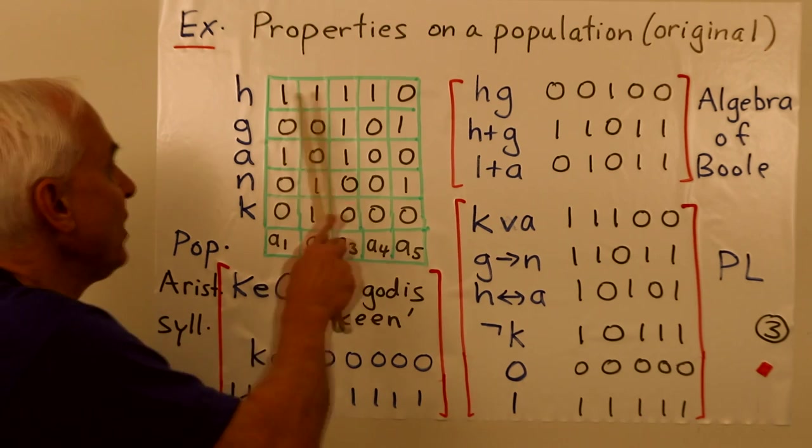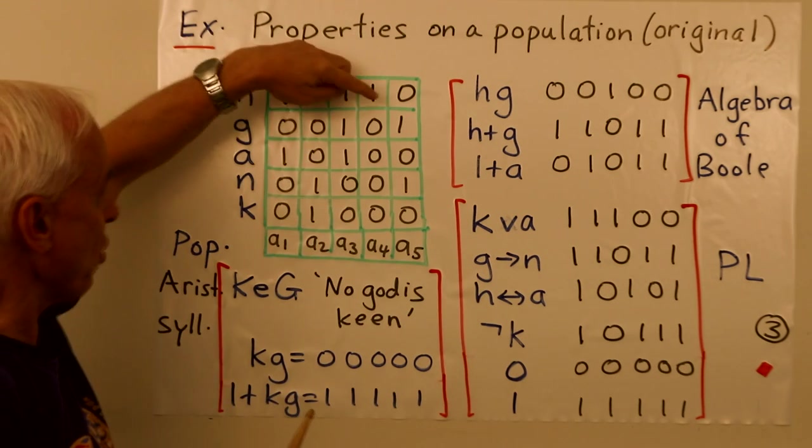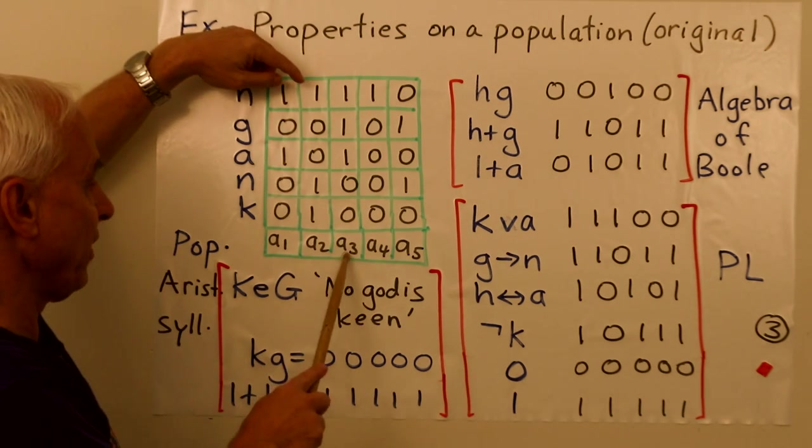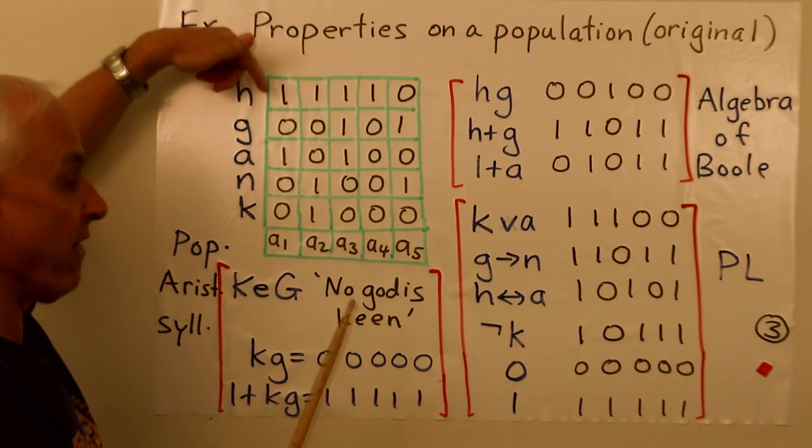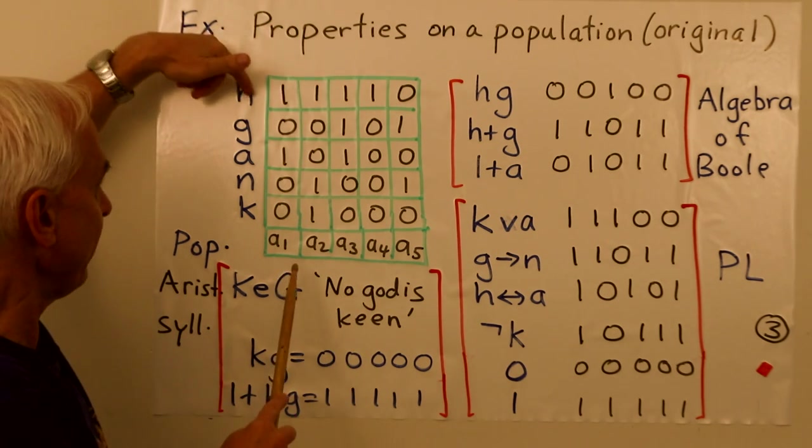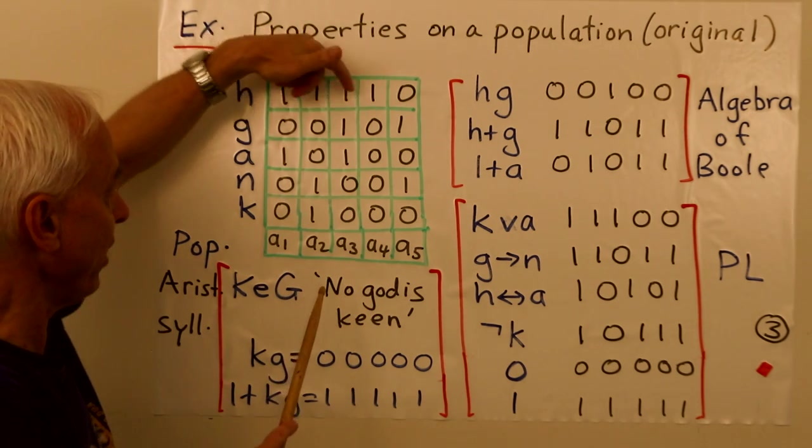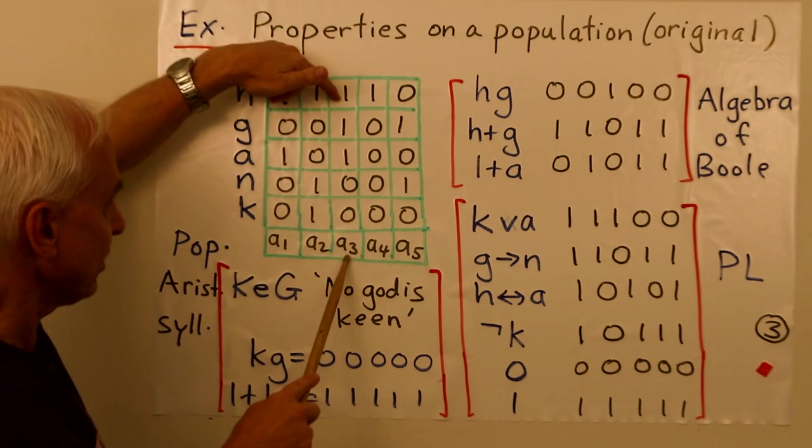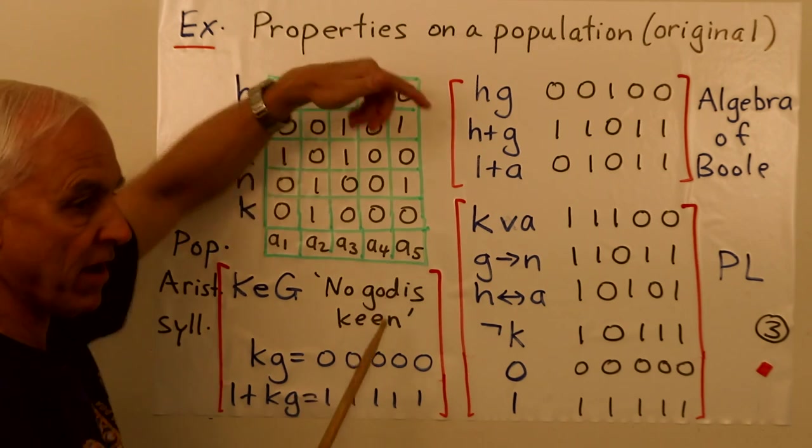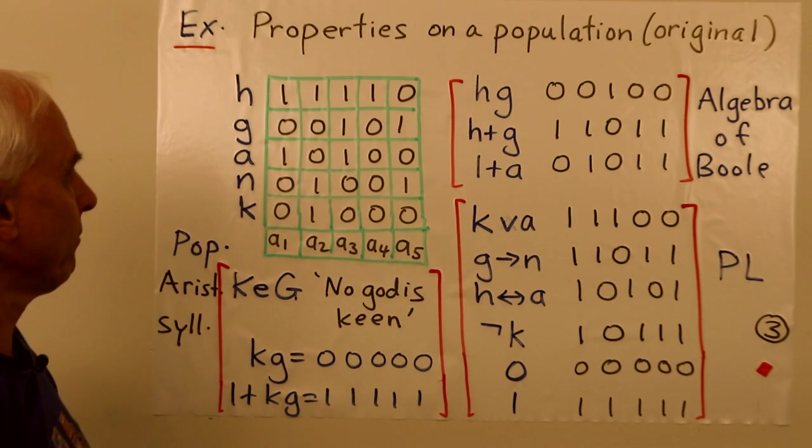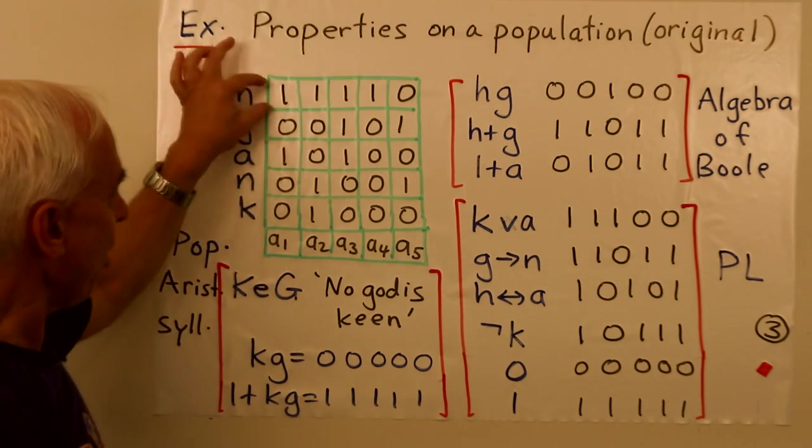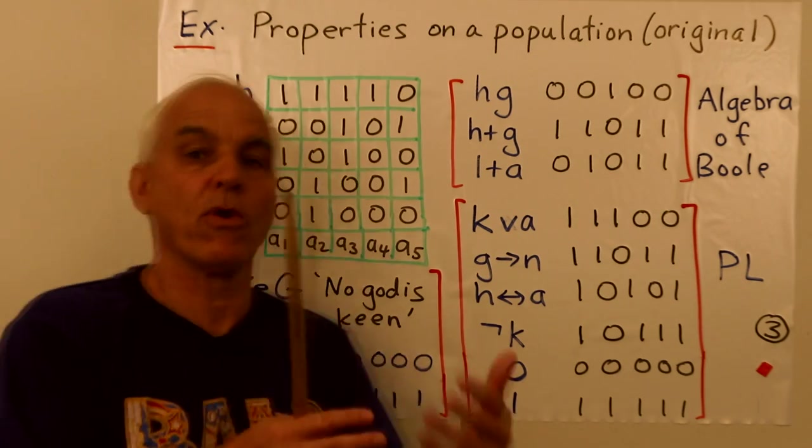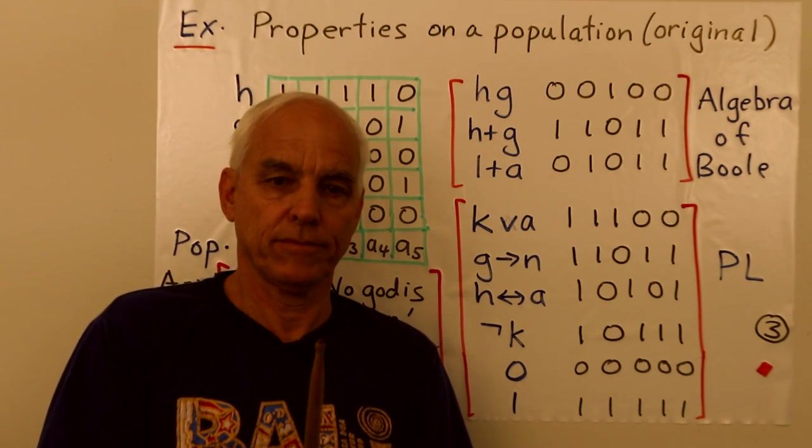So what do these vectors mean? The vectors just record which of the elements in the population have which properties. So this vector for H, 1, 1, 1, 1, 0, means that A1 is a human, A2 is a human, A3 is a human, A4 is a human, and A5 is not a human. So they are the vectors that we're actually working with mathematically.